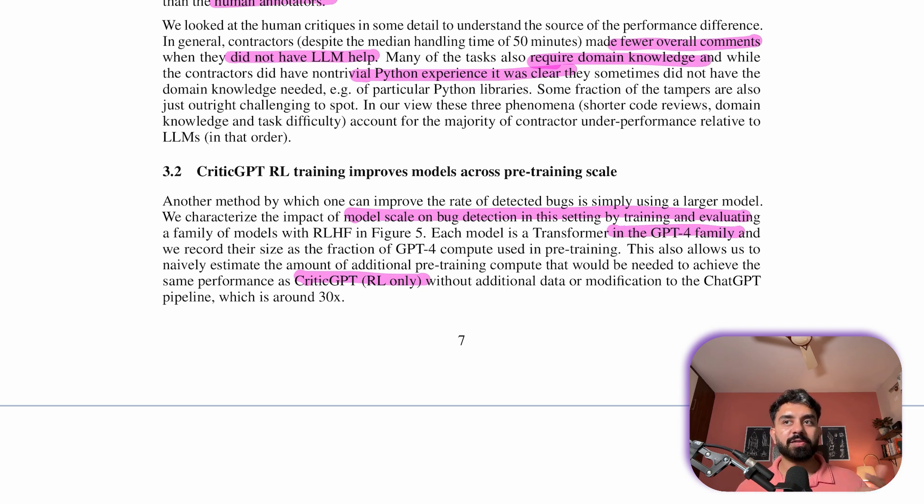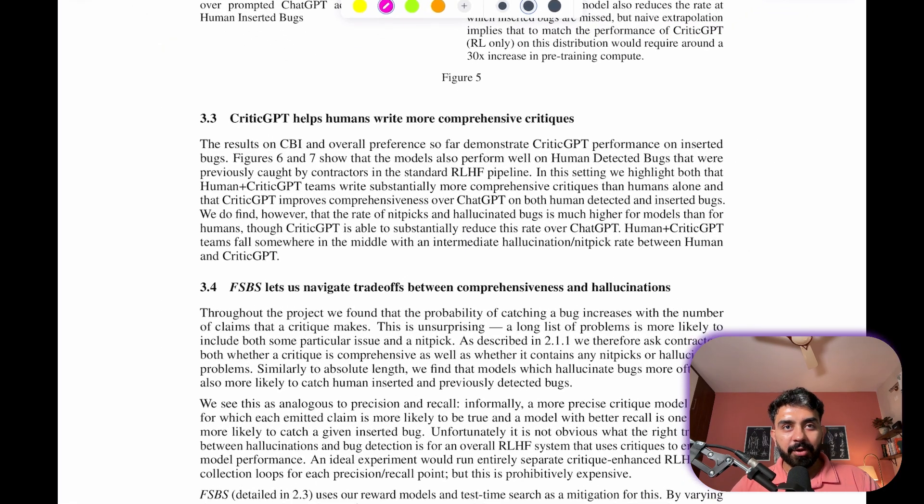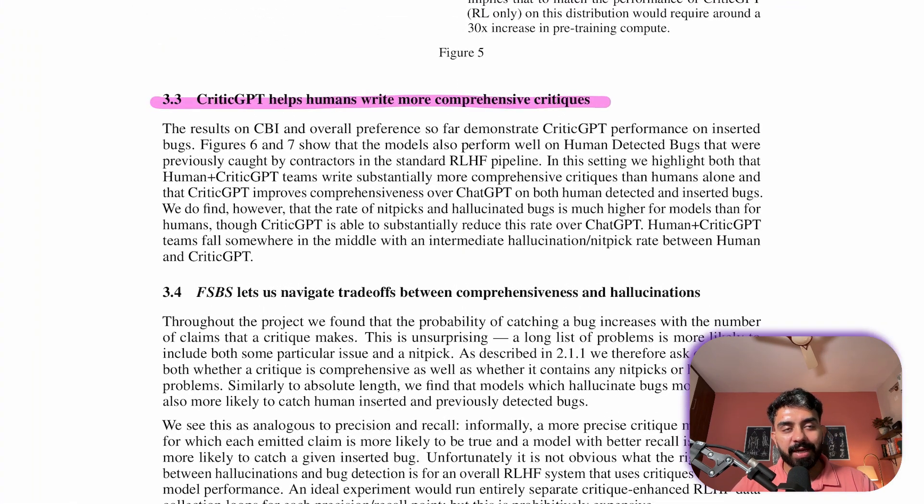They evaluated a family of GPT-4 models and found that increasing the model size improves bug detection. To match CriticGPT's performance without extra data or modifying the ChatGPT pipeline, about 30 times more pre-training compute would be needed in order to achieve that.